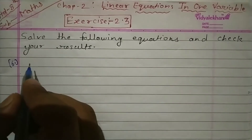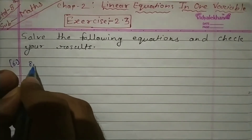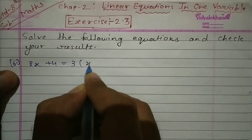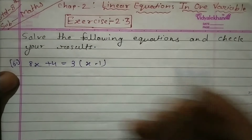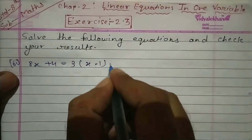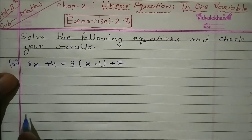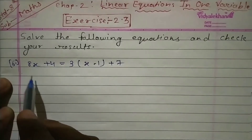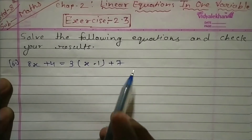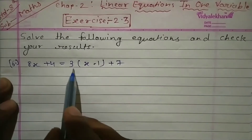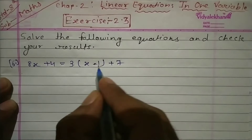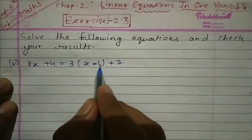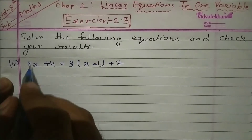Question number 6 यहाँ पे start करते हैं। दिया गया है: 8x + 4 = 3(x - 1) + 7। देखो, जितने भी variable हैं उनको left hand side move करना है और non-variable को right hand side पे ले जाना है। लेकिन यहाँ x - 1 के बाहर multiplication है, तो सबसे पहले इसको multiply करना पड़ेगा।